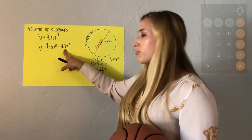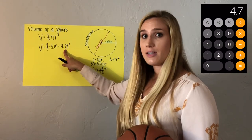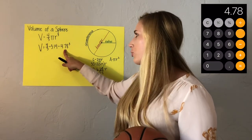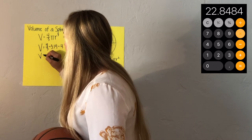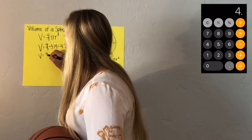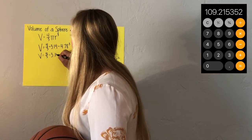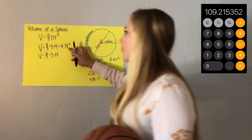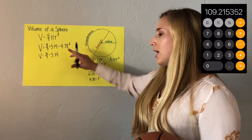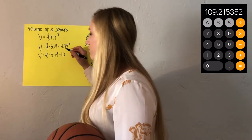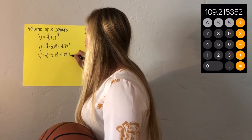Order of operations says I need to compute 4.78 to the third power first — that means 4.78 times 4.78 times 4.78. So now I have V equals 4 thirds times 3.14 times 109.22, since that exponent simplifies to approximately 109.22.